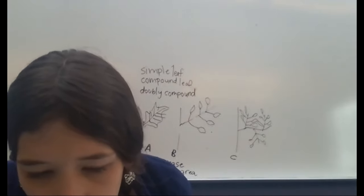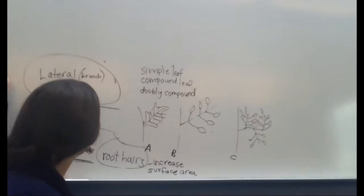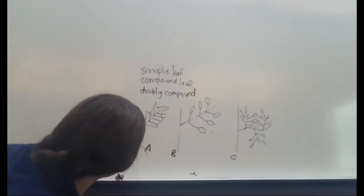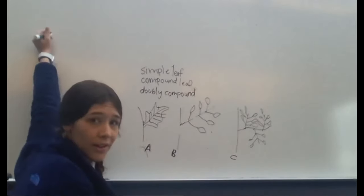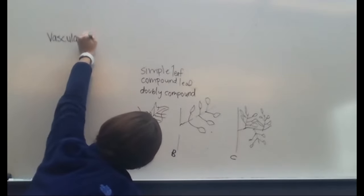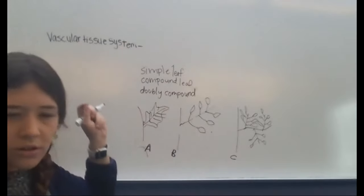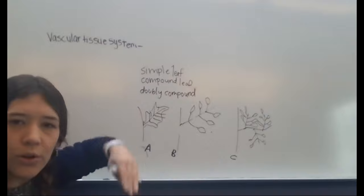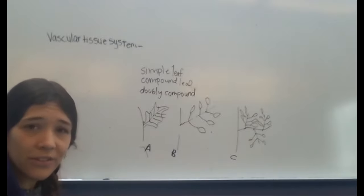Now let's talk about the vascular tissue system, which I think is super cool in plants because plants are all connected. The vascular tissue system is in charge of the long-term transport of materials between the root and shoot systems. The roots and shoots have to communicate — they have to transport things between them so the plant can keep running smoothly, and they use the vascular tissue system to do just that.